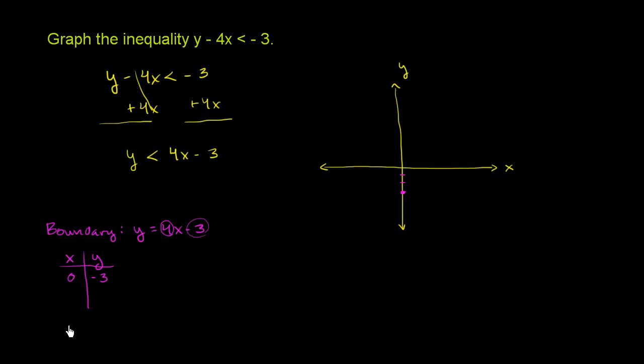Let's say when x is equal to 2, when x is equal to 2, what is y? We have 4 times 2 is 8, minus 3.